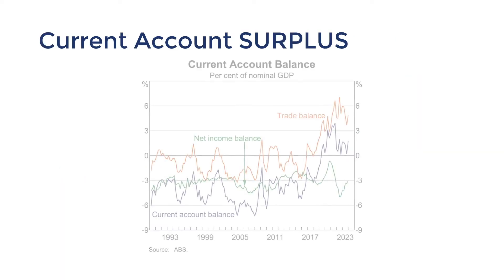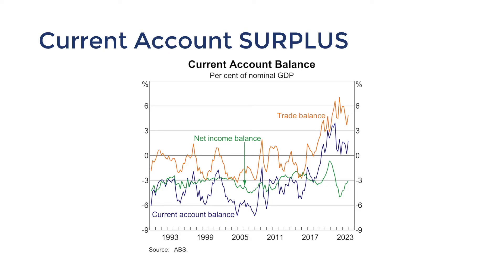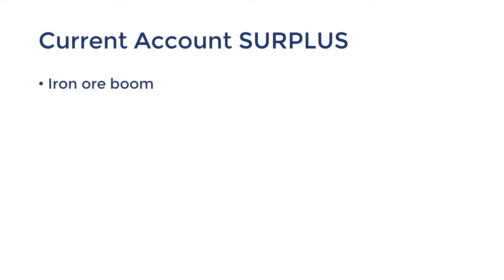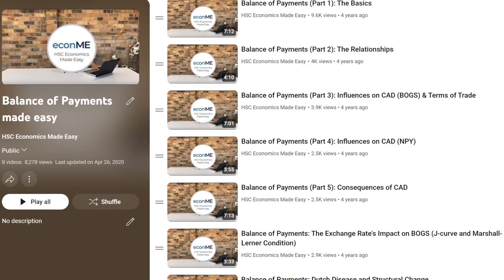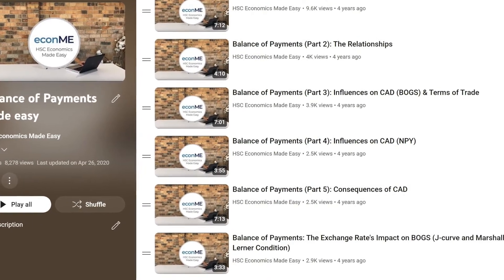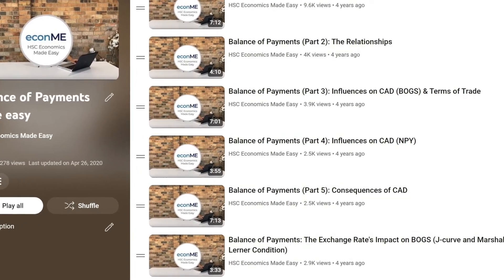On the other hand, a recent trend that you'll need to be aware of is that Australia turned the 44-year deficit around with a current account surplus in September 2019. This has mostly been driven by cyclical factors, including an iron ore boom, as well as a higher savings ratio and lower interest rate differentials during COVID-19. You could check out my videos about the influences on BOGS and MPY for more detail.